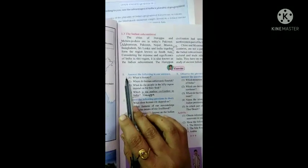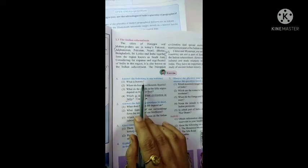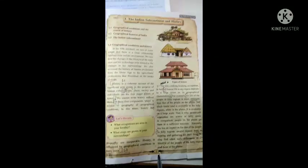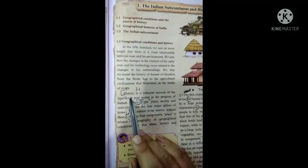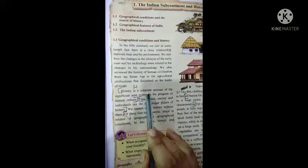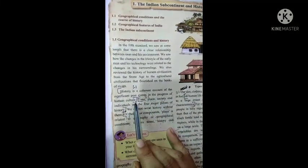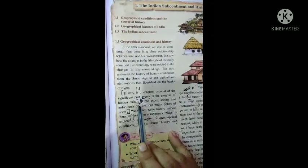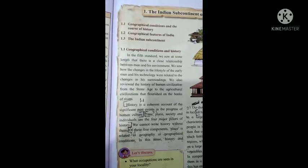So first question we are going to see. Question number 1: Answer the following in one sentence. What is history? So you can find this answer on very first page, page number 1. Here you will get the answer. History is a coherent account of the significant past events in the progress of human culture. Up to here you have to write question number 1.1. This is the answer of 1.1.